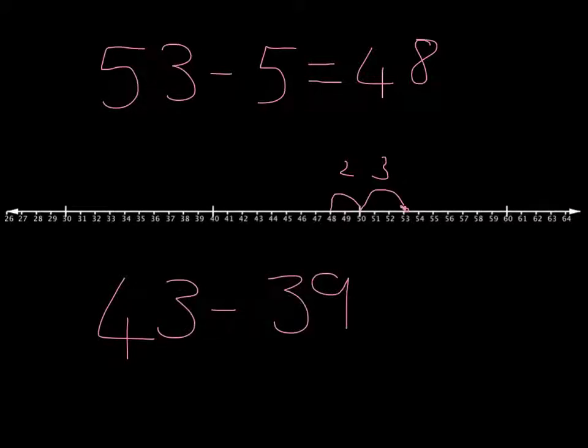However, if we're going to try that way of doing subtraction to do a calculation like 43 minus 39 again we're going to take a long time because we'd have to start at 43 and take 39 steps back. Even if we do some jumping it's not the most efficient way to do it. So what can we do in a case like this?